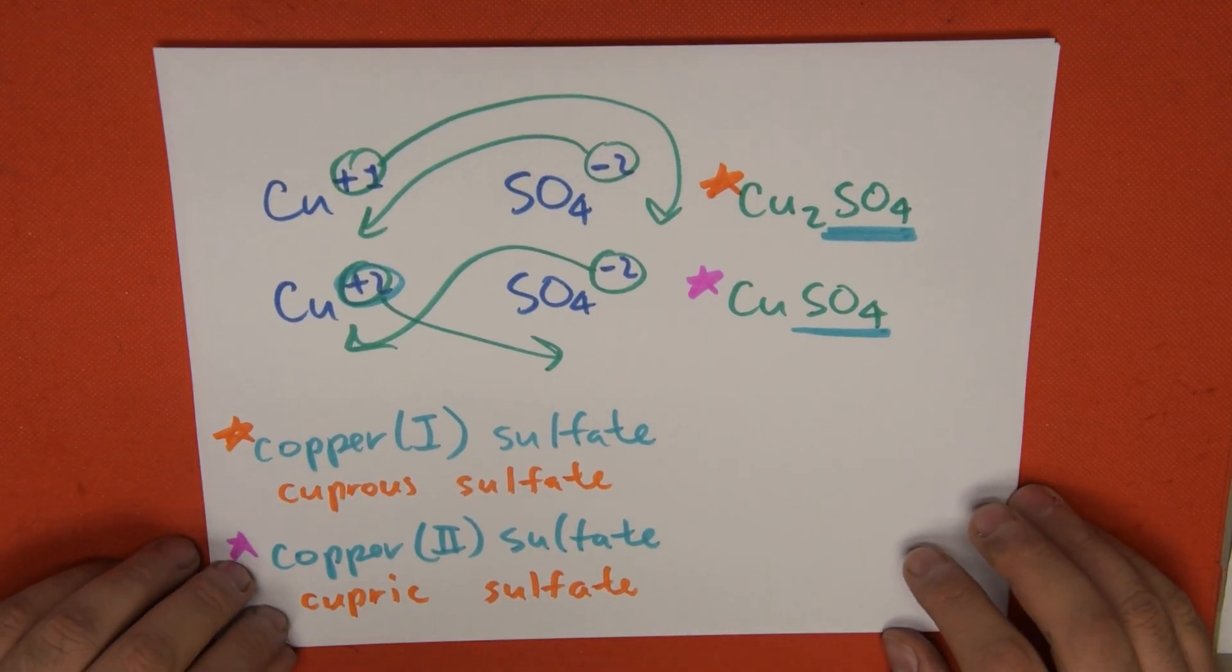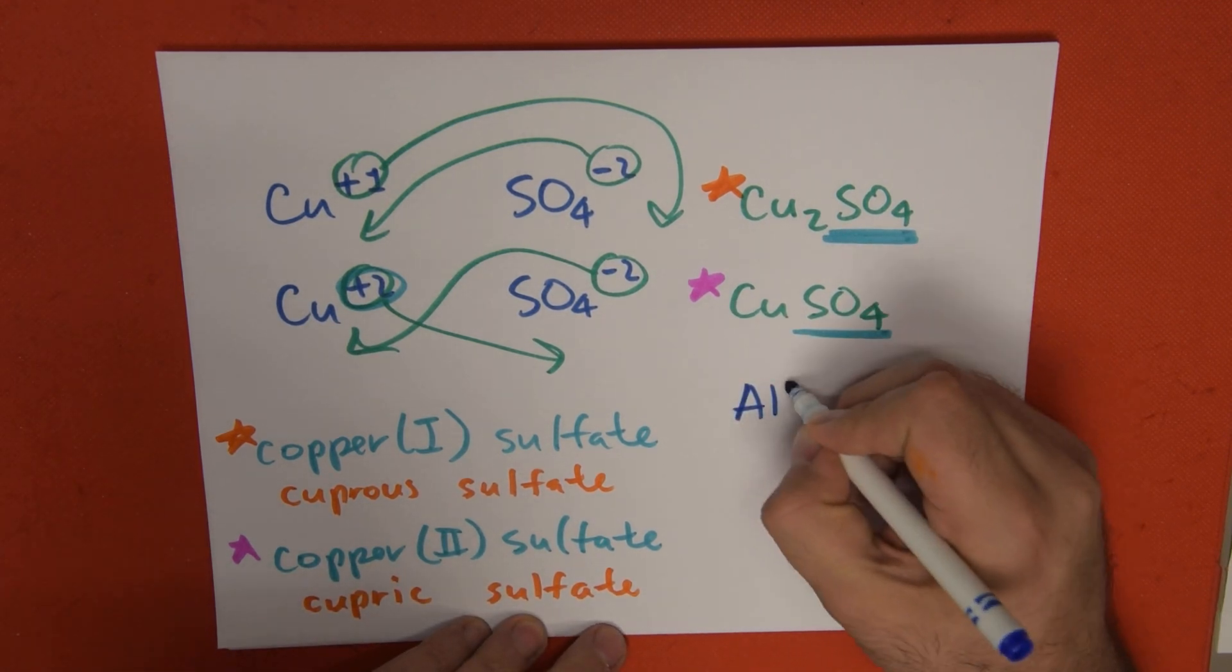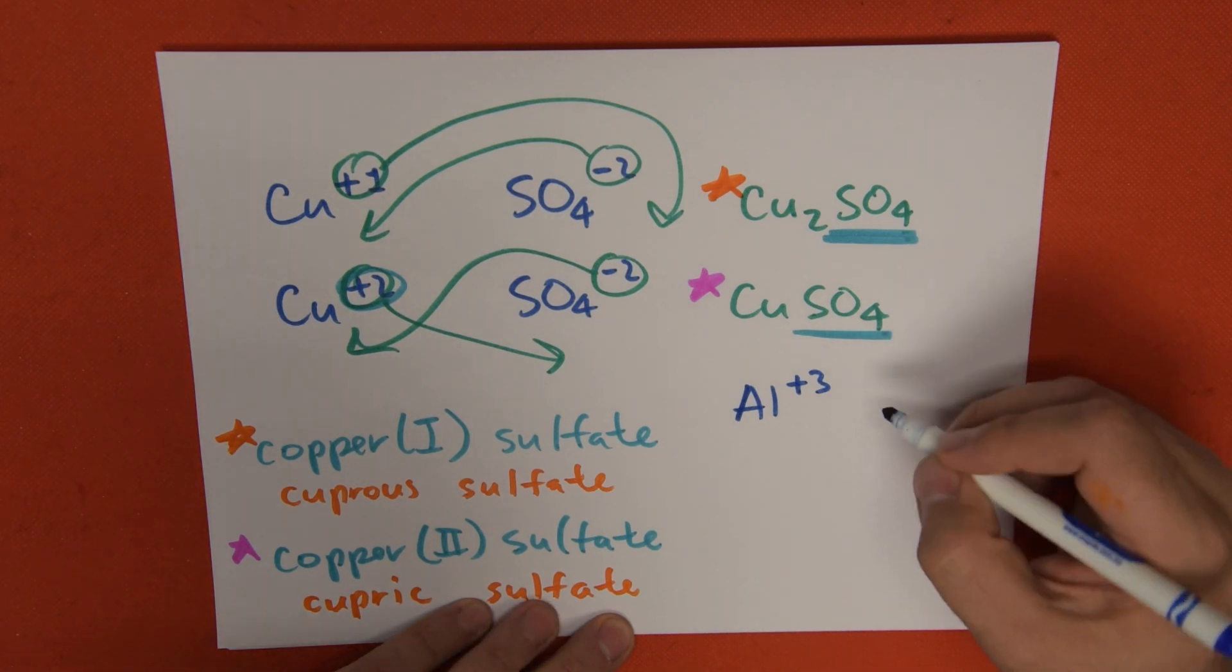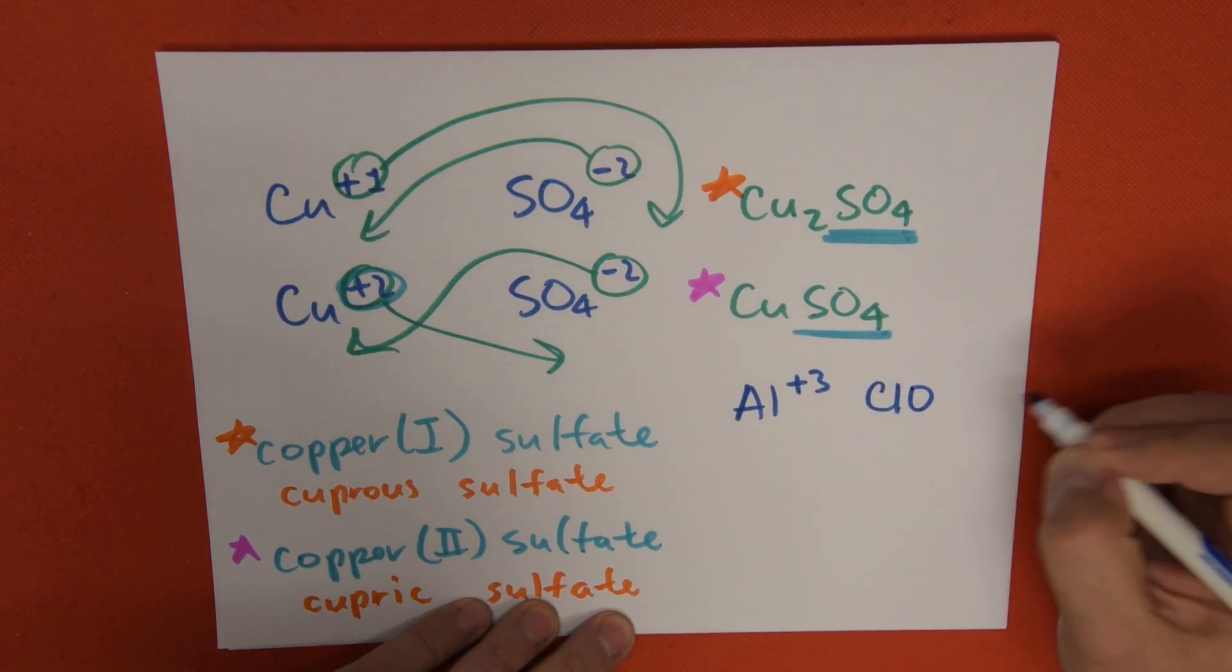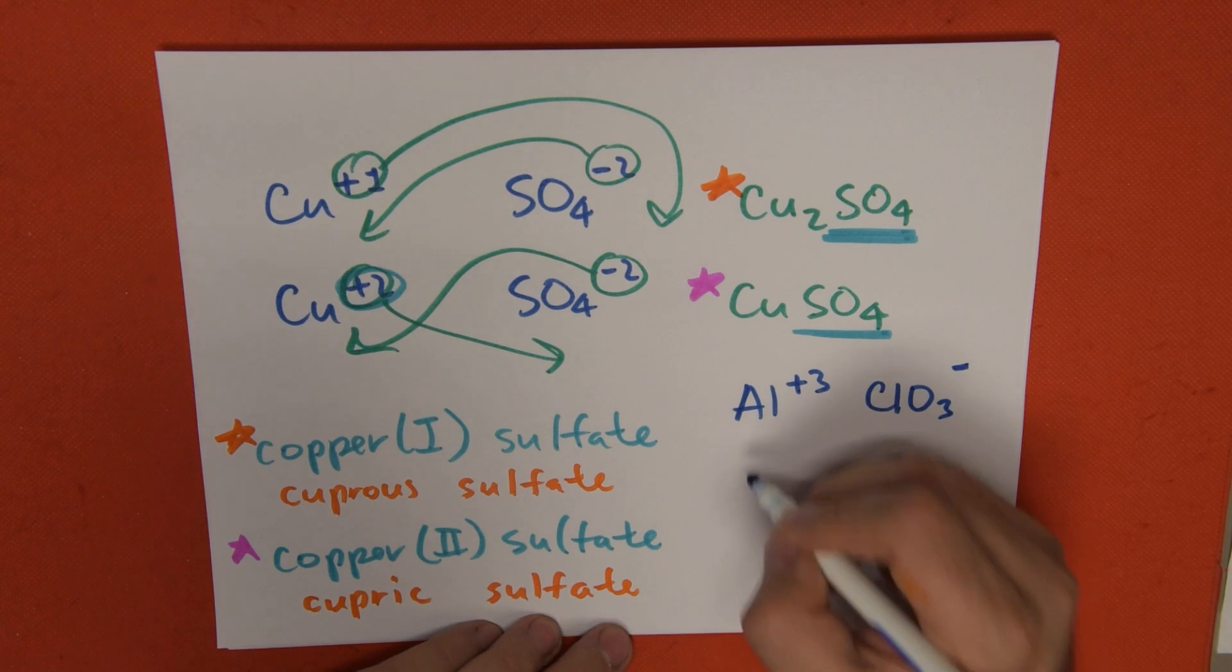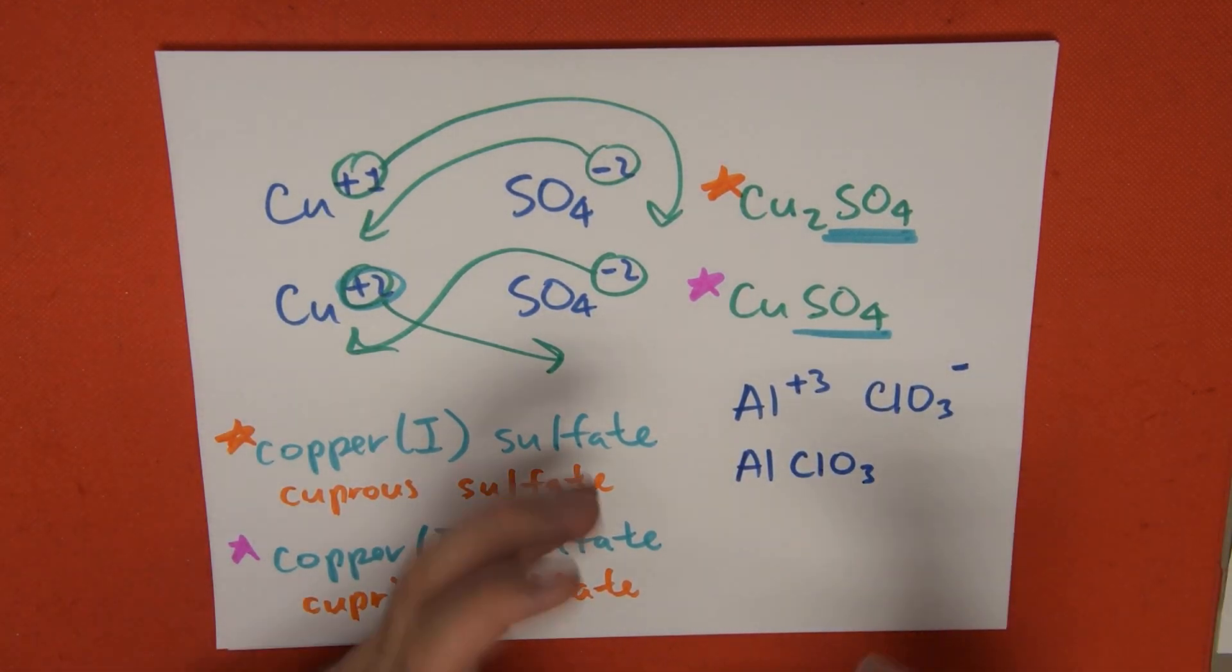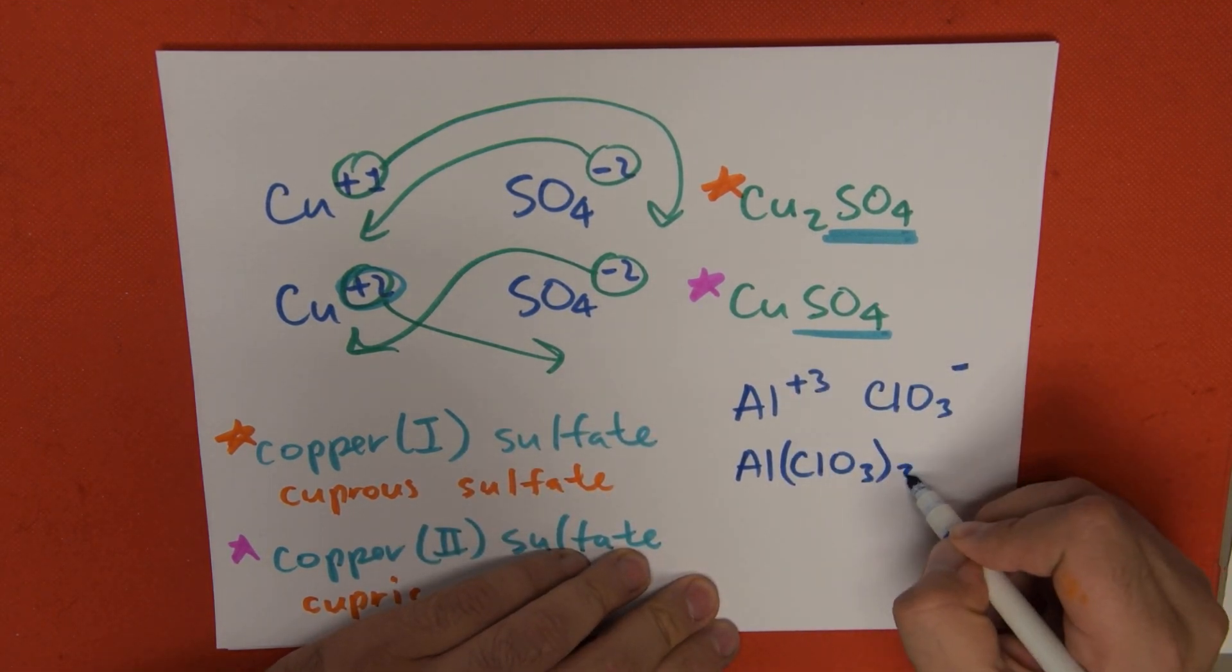We're going to do one last example. For example, aluminum plus 3. We're going to do chlorate. Chlorate is minus 1. It's ClO3 with a negative 1. When we do the criss-cross of the numbers, aluminum gets 1, so we don't write it. ClO3, which is one block, is going to be between parentheses, and this 3 is going to come down here.